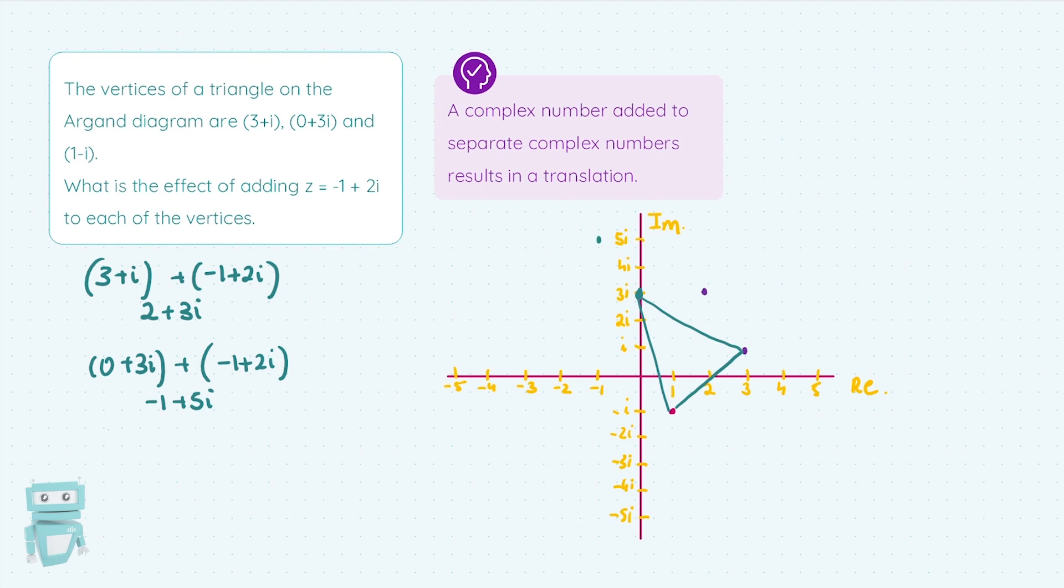And then the last one, 1-i, adding on -1+2i. Adding together our real parts, 1-1 is 0. And then adding together our imaginary parts, -i+2i gives me i. What color did we do that in? We did it in red.